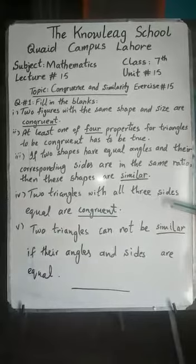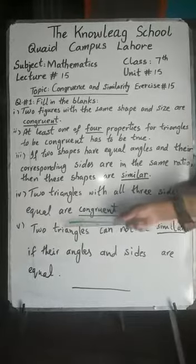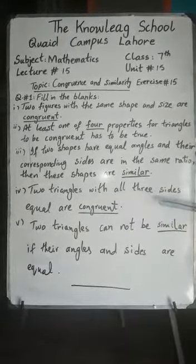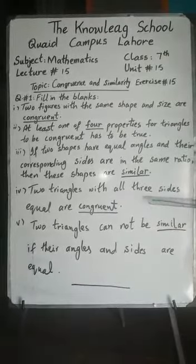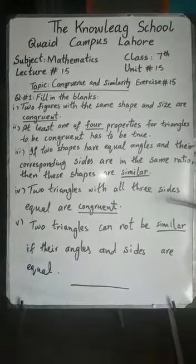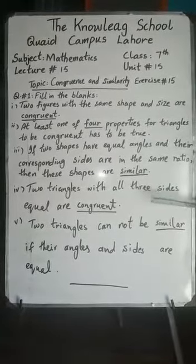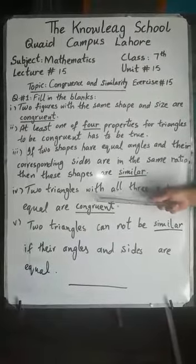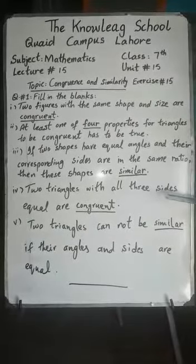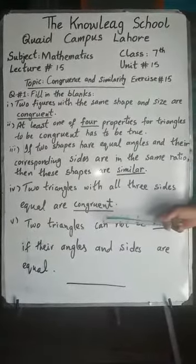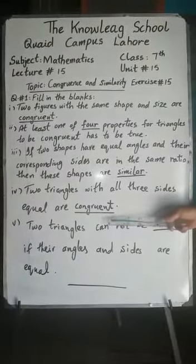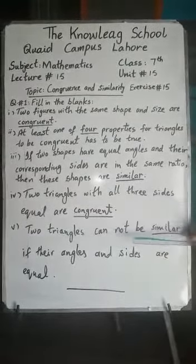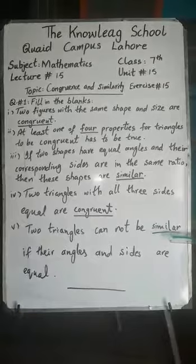Fourth part: two triangles with all three sides equal are congruent. If we compare two triangles with each other and all three sides are equal, then the two triangles are congruent.